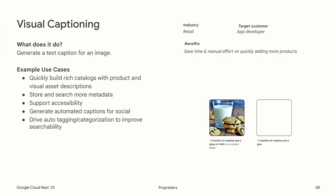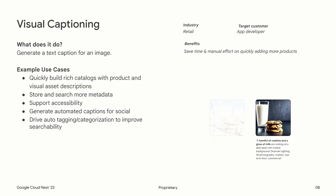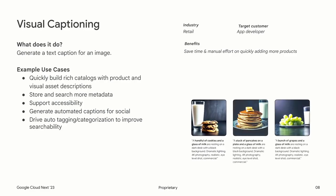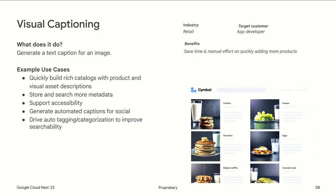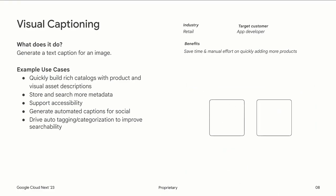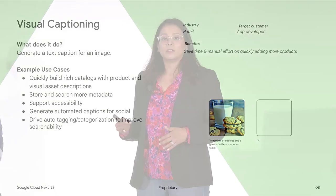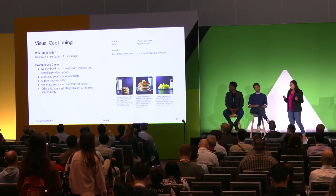There are some other use cases captioning can help with. One is social — there are a lot of images that go out in your social media marketing and you may want captions to drive hashtags. You can also use it for auto tagging or categorization now that you know what the image is actually about. And then of course, accessibility — it makes content more accessible for all human beings.